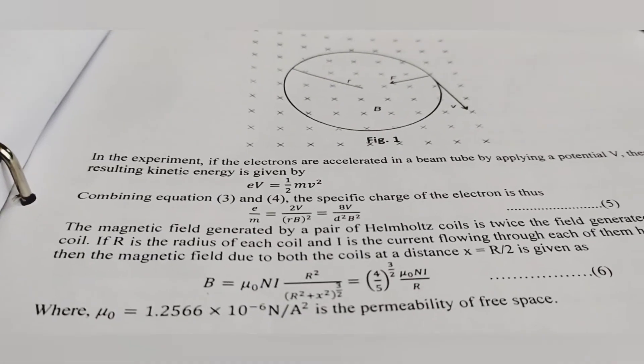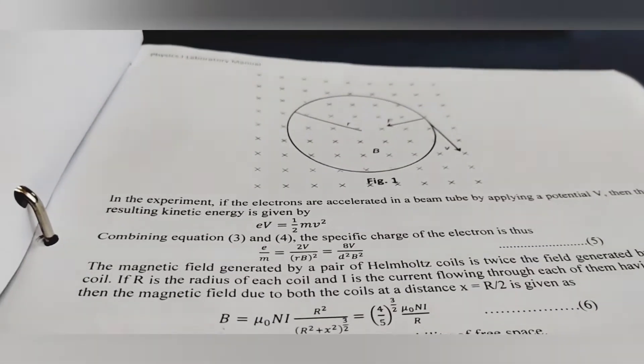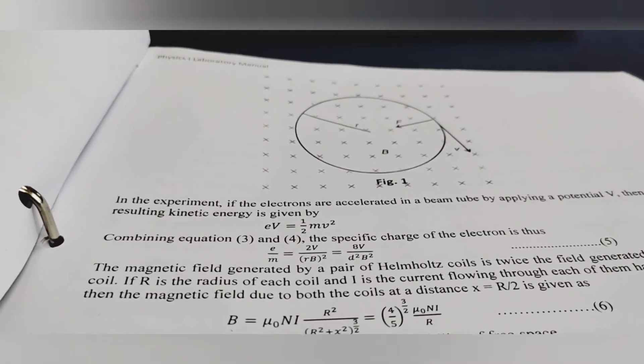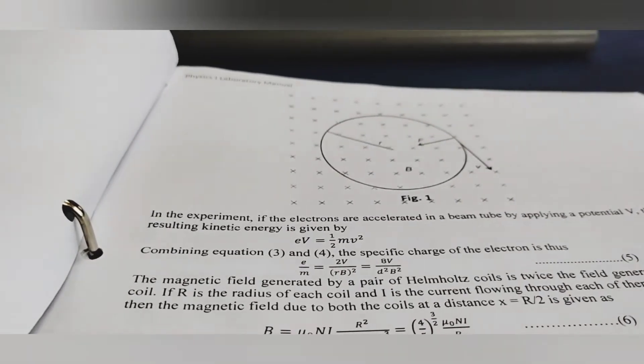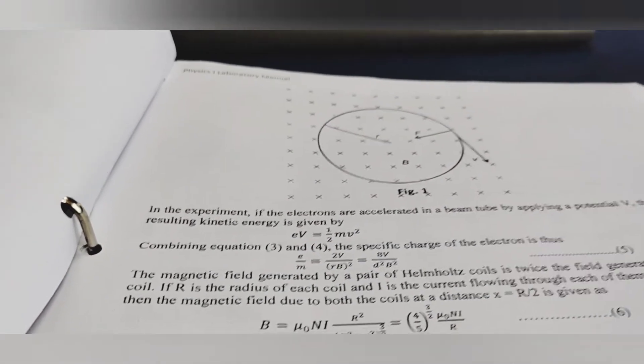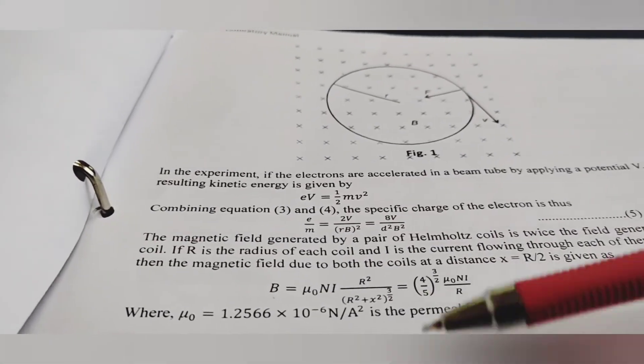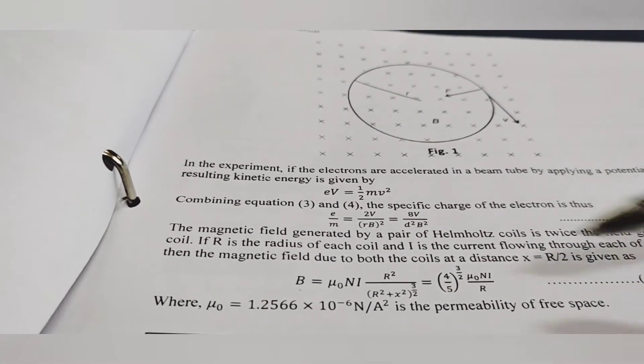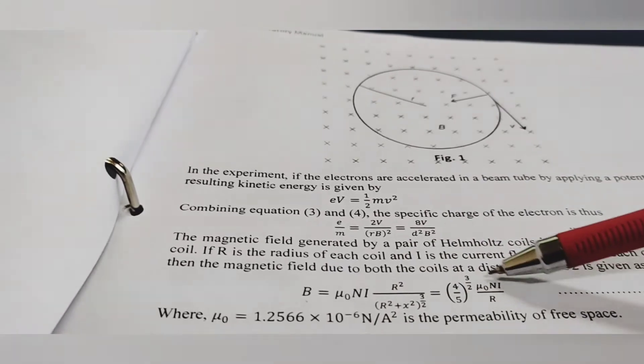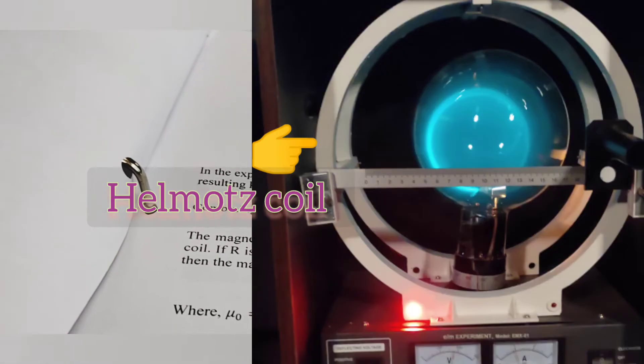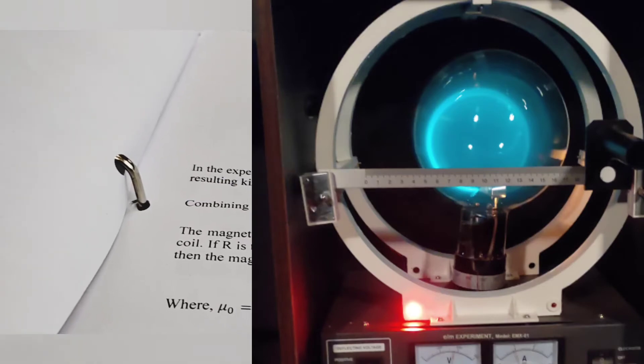The magnetic field strength, capital B, is denoted by 4 by 5 to the power 3 by 2 into mu naught capital N I divided by capital R. Now what is mu naught? Mu naught is permeability of free space, that value is given. What is capital N? Capital N is number of turns of Helmholtz coil, that is 160.